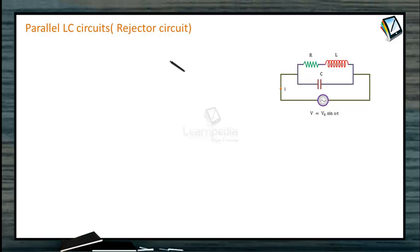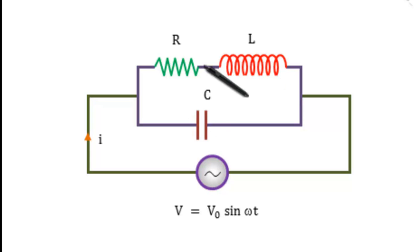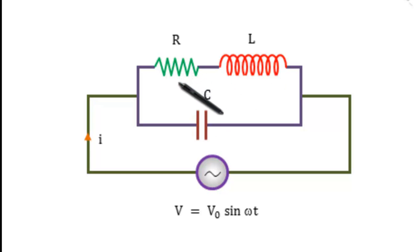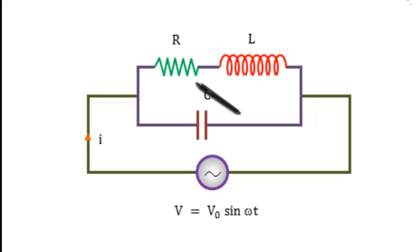Parallel LC circuit, or Rejector circuit. Consider an LC circuit. Along with the inductor there is a resistance R. An AC source is connected across an inductor in parallel with capacitor C. The resistance in series with the inductor is R.